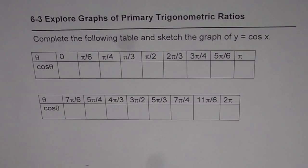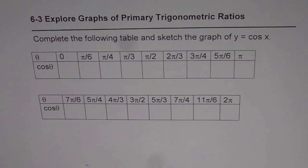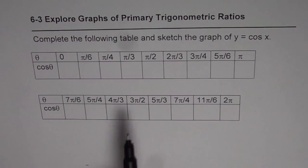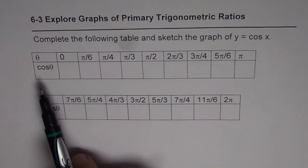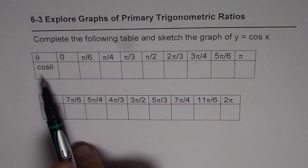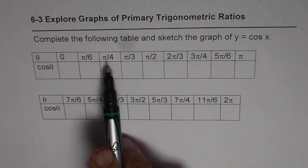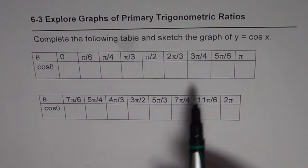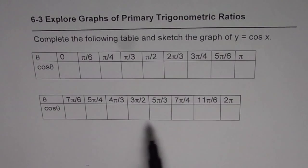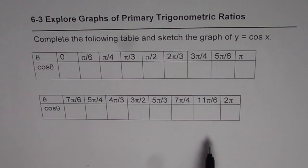I'm Anil Kumar and in this video we'll try to understand how to sketch a graph for the trigonometric function y equals cosine x. I have a table here where theta values are given in radians. You need to find out what cos theta is for values like 0, pi by 6, pi by 4, and so on. Once you complete the table, you need to sketch the cosine function and write down some characteristics for it.